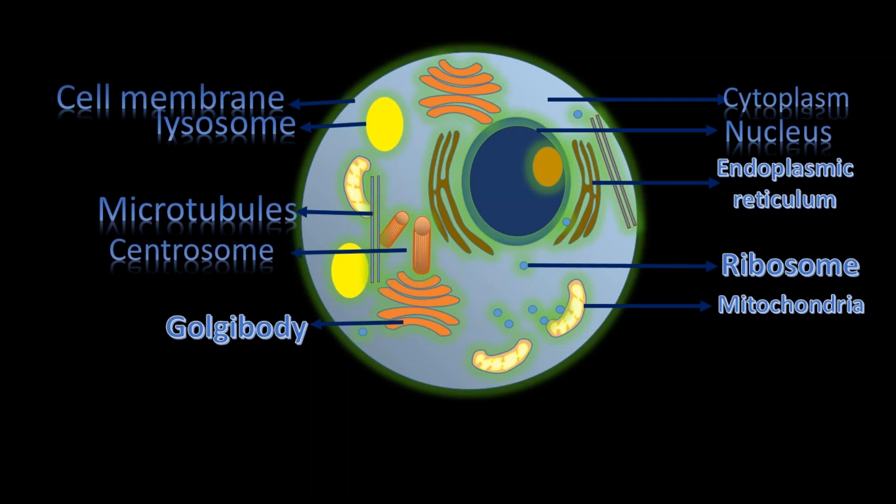The cell membrane protects the cell by forming a boundary which allows the entry of some substances and obstructs others. It's a porous membrane. Cytoplasm is a thick jelly-like liquid inside the cell which contains all the cellular organelles. Let's see all these organelles one by one in detail.